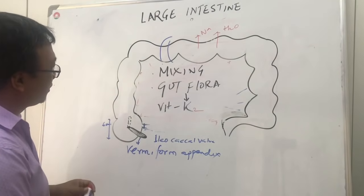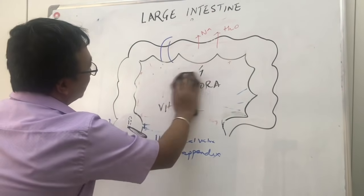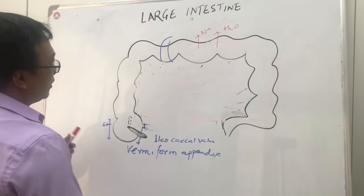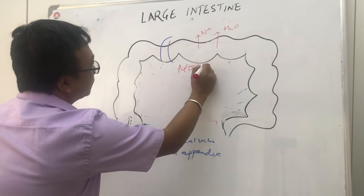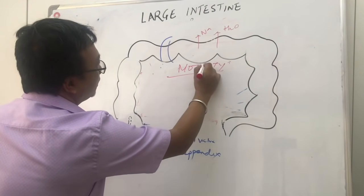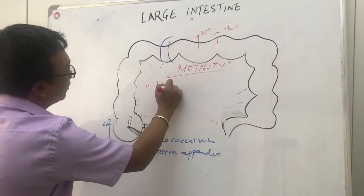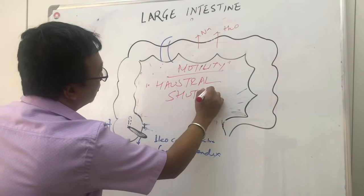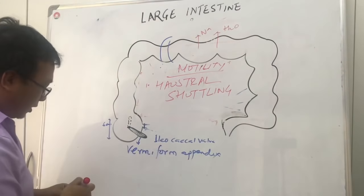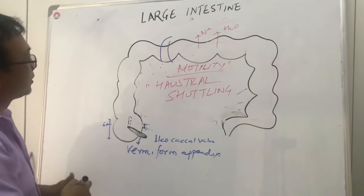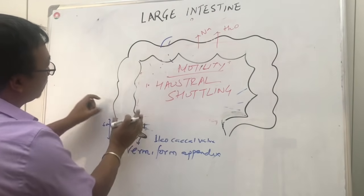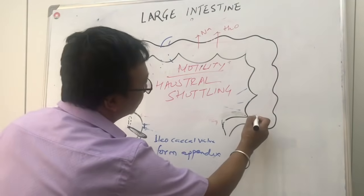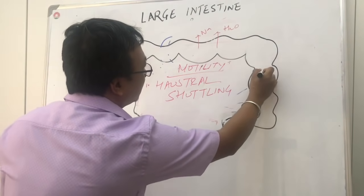Coming to large intestinal motility, there are three types. Number one is haustral shuttling. The large intestine is formed with haustra, and within the haustra you also see a ribbon-like structure called taenia coli.